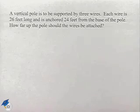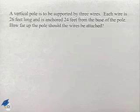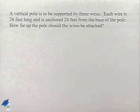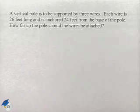Now let's look at an application problem. A vertical pole is to be supported by three wires. Each wire is 26 feet long and is anchored 24 feet from the base of the pole. How far up the pole should the wires be attached?